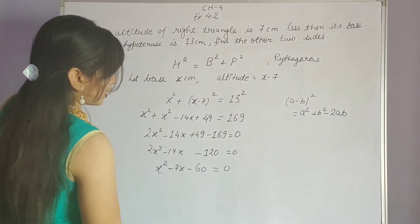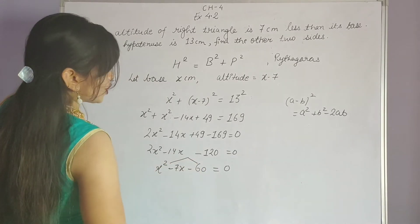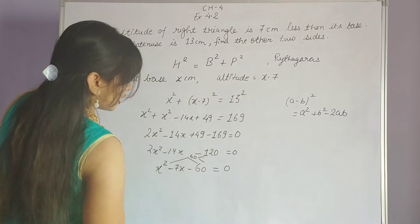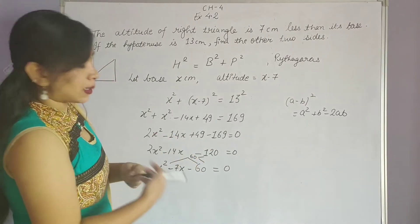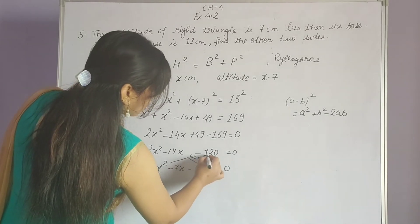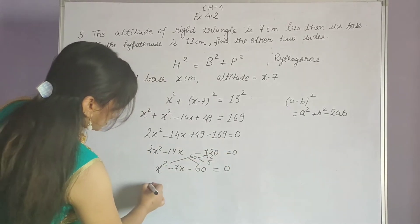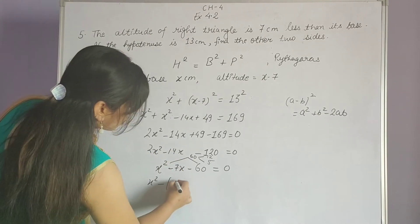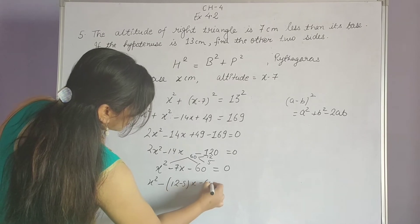Now what do you want to do? You have x squared, the coefficient and constant term. The product you have to factorize. We can see that x squared minus 7x minus 60 equals 0. We split the middle term: 12 and 5, since 12 minus 5 gives 7.